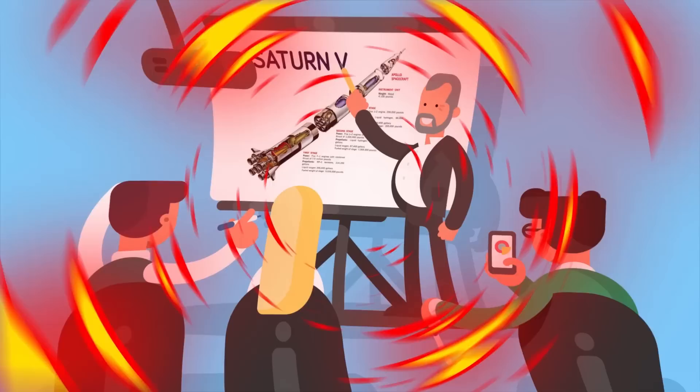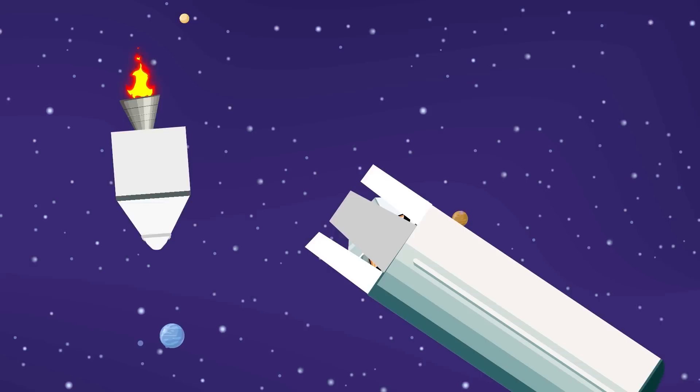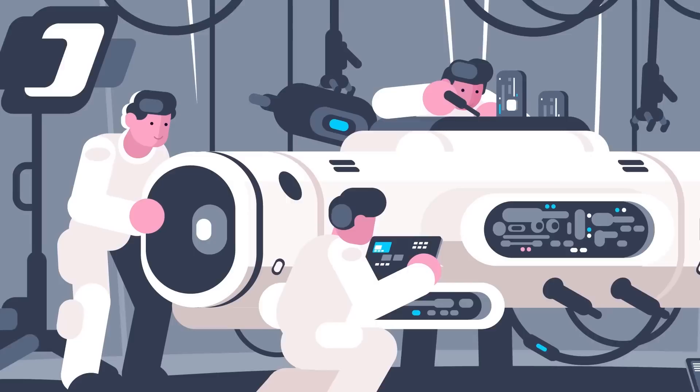Then the second stage would separate, and the third stage would fire to put the spacecraft on a parking orbit around the Earth. At that point, the Apollo command and service module would detach from the third stage, turn around and dock with the lunar module, which was secured right below the CSM during launch, and extract the lunar module from the spent third stage. All of this required an incredible amount of careful engineering, and with millions of moving parts, anything could go wrong at any time.